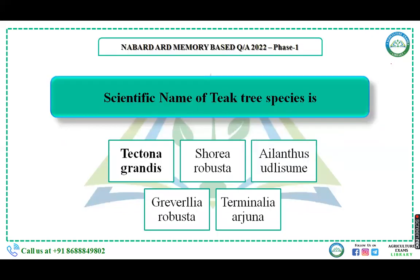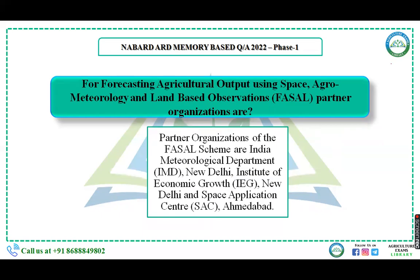Next question: the scientific name of teak tree is Tectona grandis — a very simple question. The next question asked about forecasting agriculture output using space, agro-meteorological, and land use observations, i.e., the FASAL scheme. The partner organizations are: Meteorological Department New Delhi, Institute of Economic Growth New Delhi, and Space Application Center, Ahmedabad.